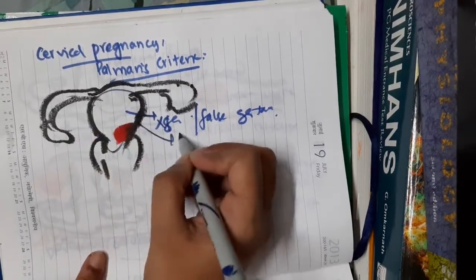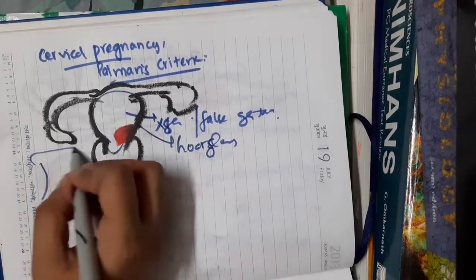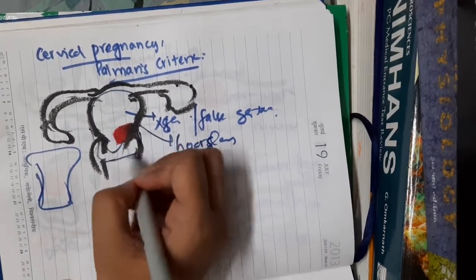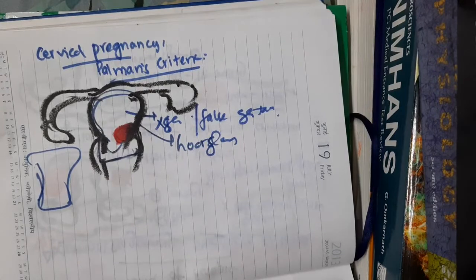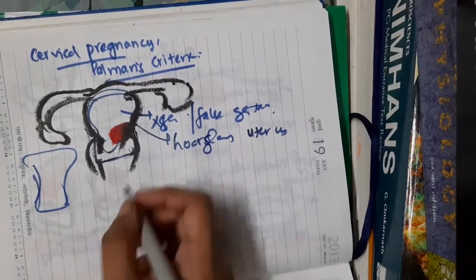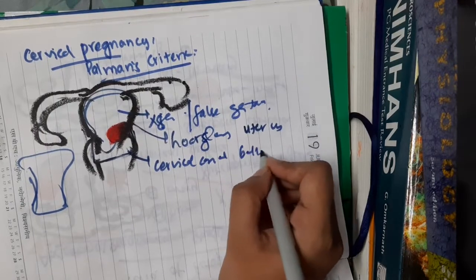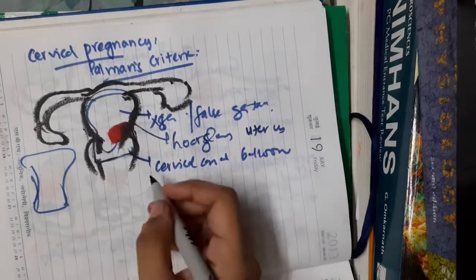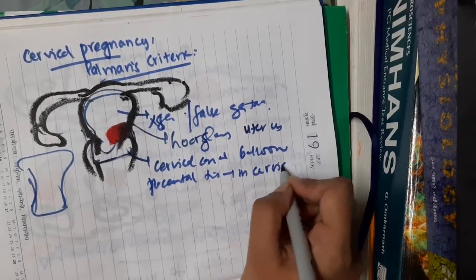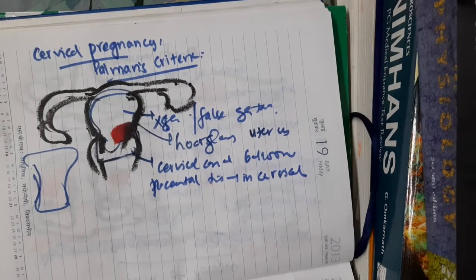The uterine shape will be hourglass-shaped due to the cervical pregnancy. The cervix enlarges a little, giving an hourglass appearance. You will see the cervical canal to be ballooned — enlarged. Placental tissue is also seen in the cervical canal. These are the criteria for cervical pregnancy, which is PAMAR criteria.